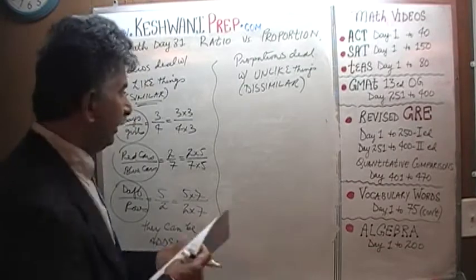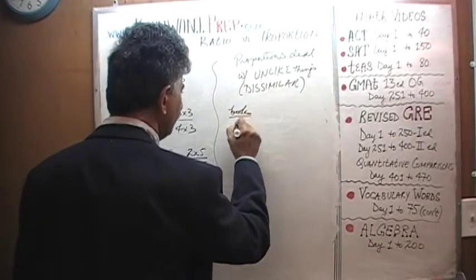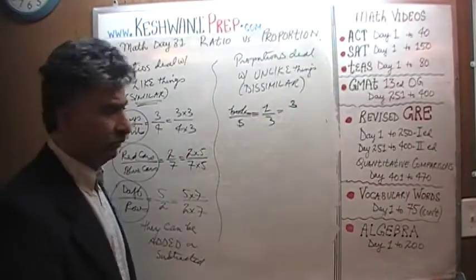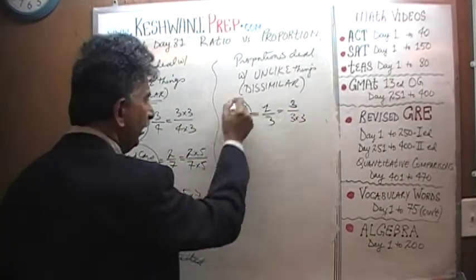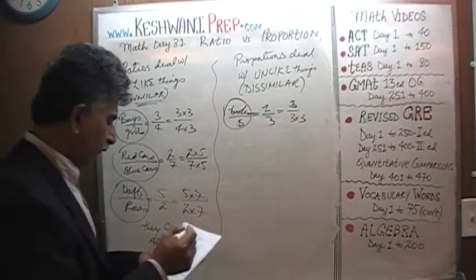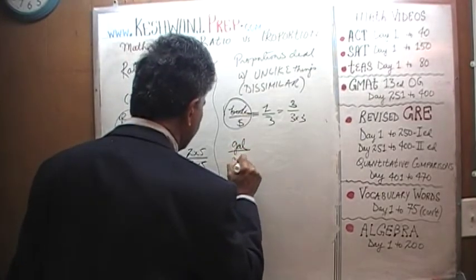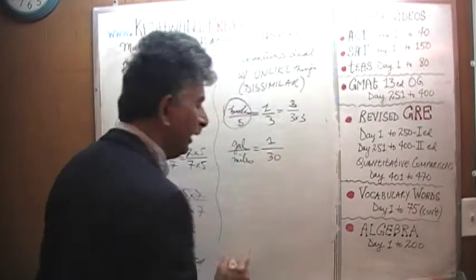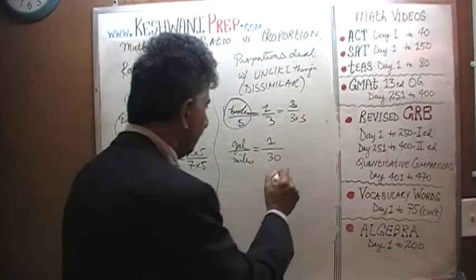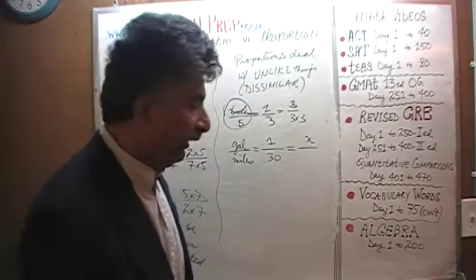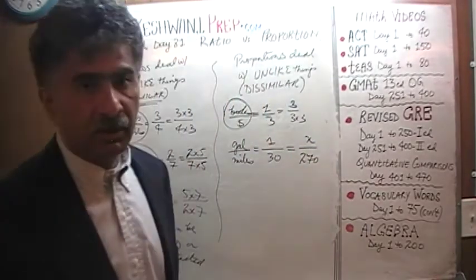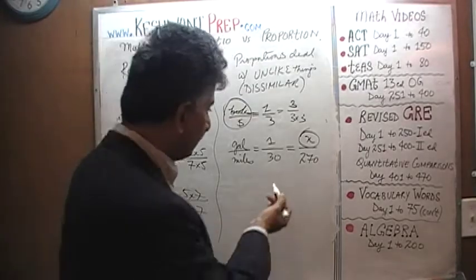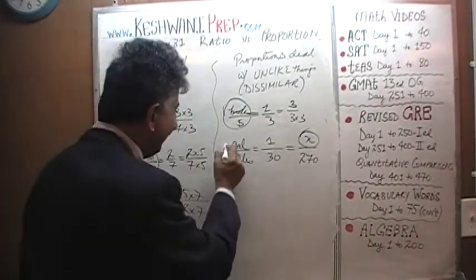For example, in a proportion we might be told that one book costs three dollars — what would be the cost of three books? It would be three times as much. We are dealing with books and dollars. Or we might be told that one gallon of gasoline gives us 30 miles. The question is: how many gallons of gasoline do I need to buy if I'm going to take a trip of 270 miles? In this case, the answer is nine, because 30 times nine is 270. But the point is they are dealing with gallons and miles.